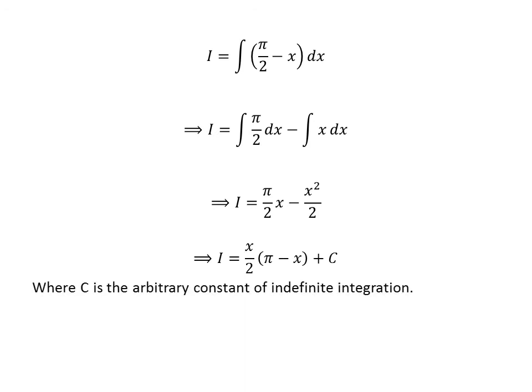Taking the common factor half of x out, we get I is equal to half of x times pi minus x. And then added capital C which is the arbitrary constant of indefinite integral. Do not forget to add this constant in the end of any indefinite integration.